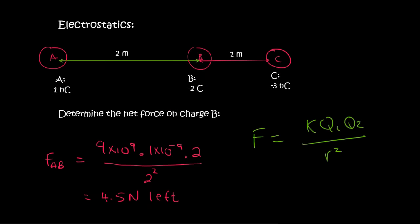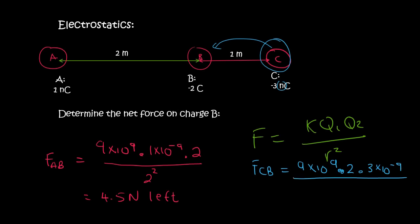Now we need to look at the effect of C on B. So I'll say FCB, and that's going to equal to 9 times 10 to the 9, multiplied by B's charge, which is 2, multiplied by C's charge, which is 3, but it's got an N over there. So it'll be 3 times 10 to the minus 9. The distance between them is 1 meter, and then square. And so if you do that, you would end up with 54.